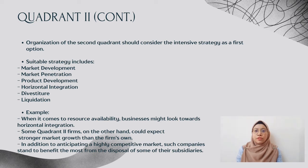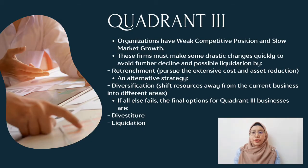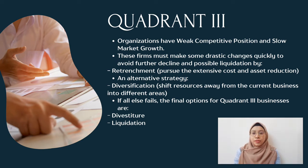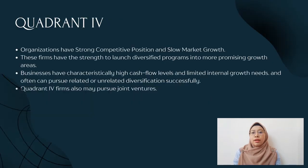Next, quadrant three organizations have a weak competitive position and slow market growth. These firms must make drastic changes quickly to avoid further decline and possible liquidation. They should first pursue retrenchment through extensive cost and asset reductions, then consider diversification by shifting resources away from the current business into different areas. If all else fails, the final options for quadrant three businesses are divestiture and liquidation.